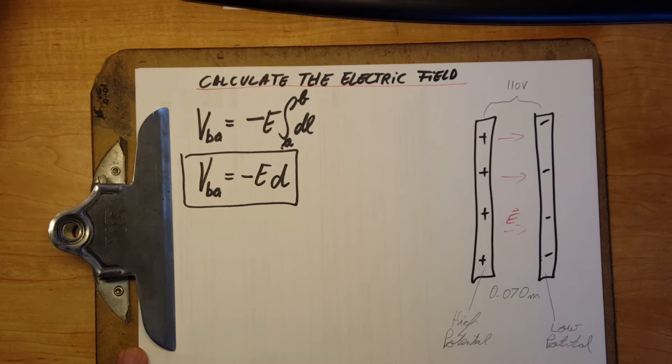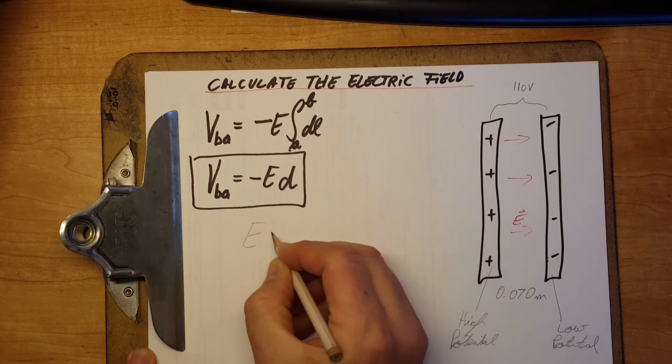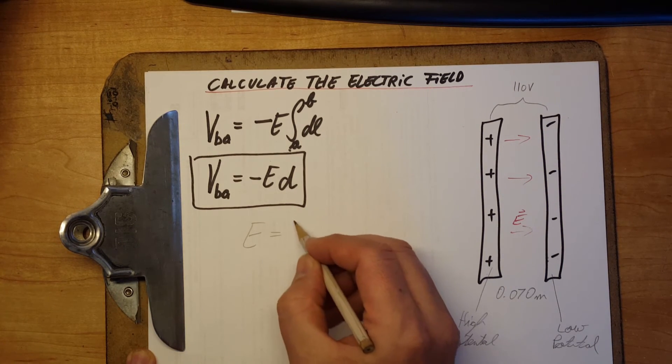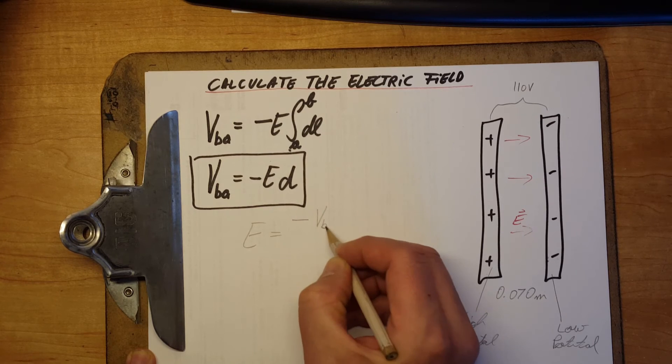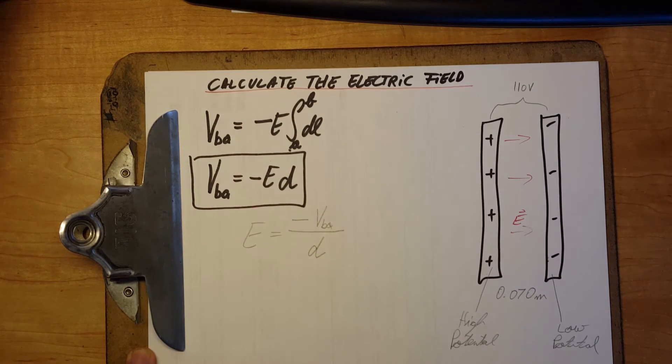We're gonna solve for our E. E equals negative VBA over D. There you go.